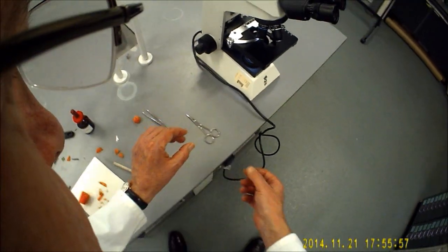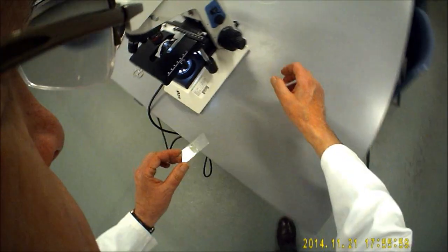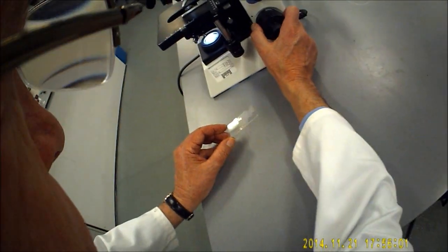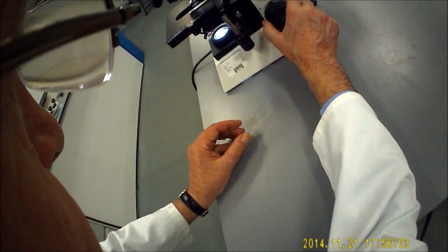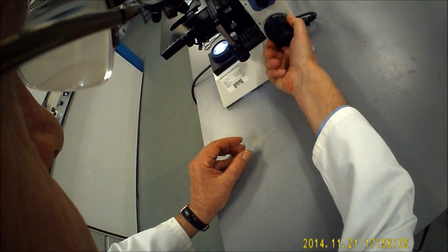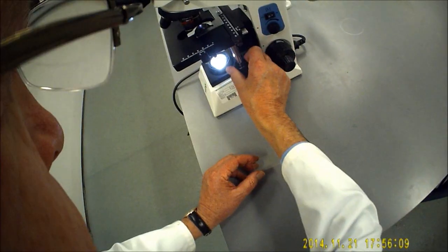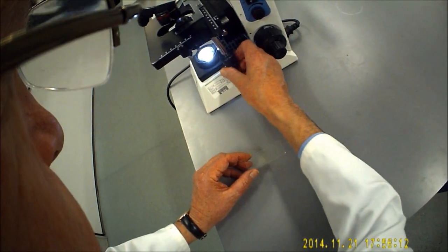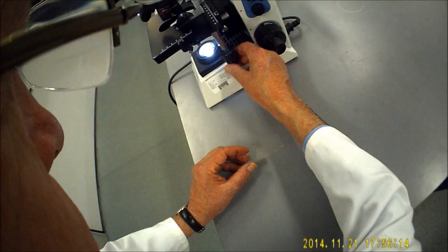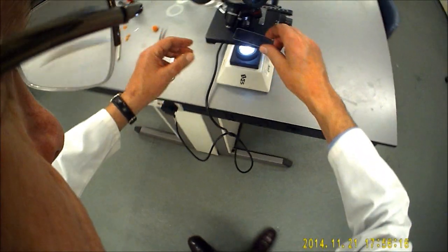So here's our microscope. First thing I need to do is to make sure that the stage is as close as possible to the lens, and then we track away from that when we're focusing. We've got our movable stage, so we'll get that centralized.